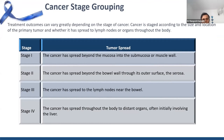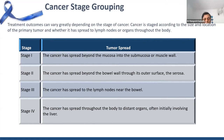Once cancer is detected, we talk about staging. Stage 1 and 2 are those stages where the tumor is in the wall of the large bowel — it has not spread beyond the bowel wall. Stage 3 means it has spread beyond the bowel wall but has not spread to other organs outside the large intestine, or it has involved lymph nodes around the large bowel. Stage 4 means it has spread to distant organs, often initially involving the liver.